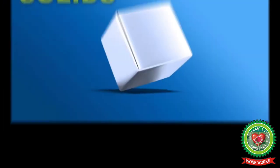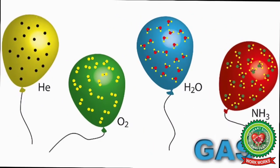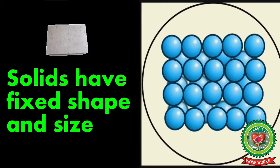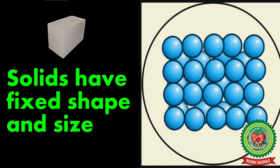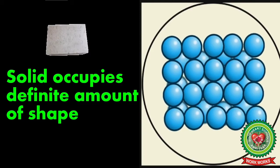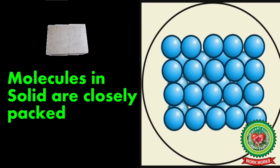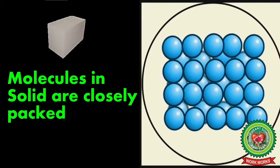Let's start with solids. A solid has a fixed size and shape and it occupies a definite amount of space. Solid is a state of matter which has a fixed shape and size, and also occupies a definite amount of space. The particles in a solid are tightly packed and lie very close to each other.